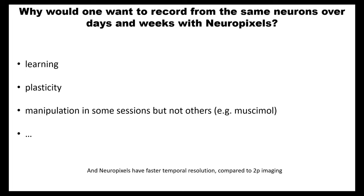There may be many things that you can answer with this kind of approach. For example, you may be interested in learning processes — you can monitor neurons in a naive animal, then as the animal is learning some task, and then record from an animal that is fully trained. You may be interested in plasticity, such as monocular deprivation, where you suture one eye and monitor what happens to visual cortex, and then as the animal recovers. One advantage Neuropixels gives you is fast temporal resolution compared to, for example, 2-photon imaging.